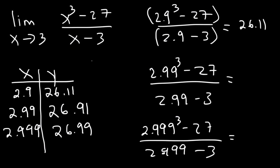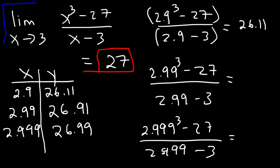So therefore we can see that as x approaches 3, as it gets closer and closer to 3, the y value approaches 27. So the limit as x approaches 3 of x cubed minus 27 over x minus 3 is equal to 27.